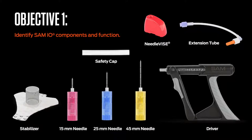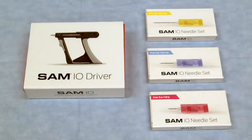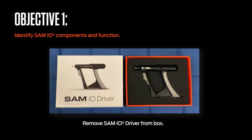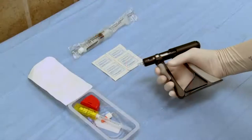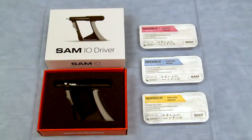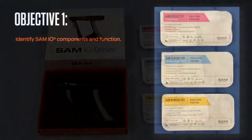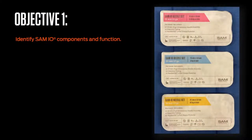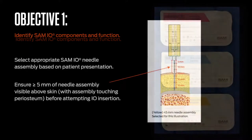No PPE or cleansing agent is supplied with the SAM.IO. The SAM.IO driver, which is reusable, can initially be found in its supplied packaging. Remove the driver from its packaging and repeatedly compress the driver's assembly to appreciate its unique function. SAM.IO needle assemblies are provided sterile in color-coded, size-specific, labeled packaging. Standard sizes include a pink 15 mm 15 gauge needle assembly, a blue 25 mm 15 gauge needle assembly, and a yellow 45 mm 15 gauge needle assembly.